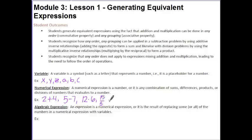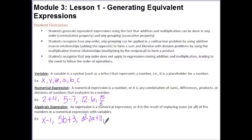The key element missing in a numerical expression is that it doesn't involve a variable. If it does involve a variable, then we're talking about algebraic expressions. An expression is a numerical expression, or the result of replacing some or all of the numbers with variables. Examples include x minus one, five b plus three, a squared minus two a plus eleven, or one-half x to the fifth power.